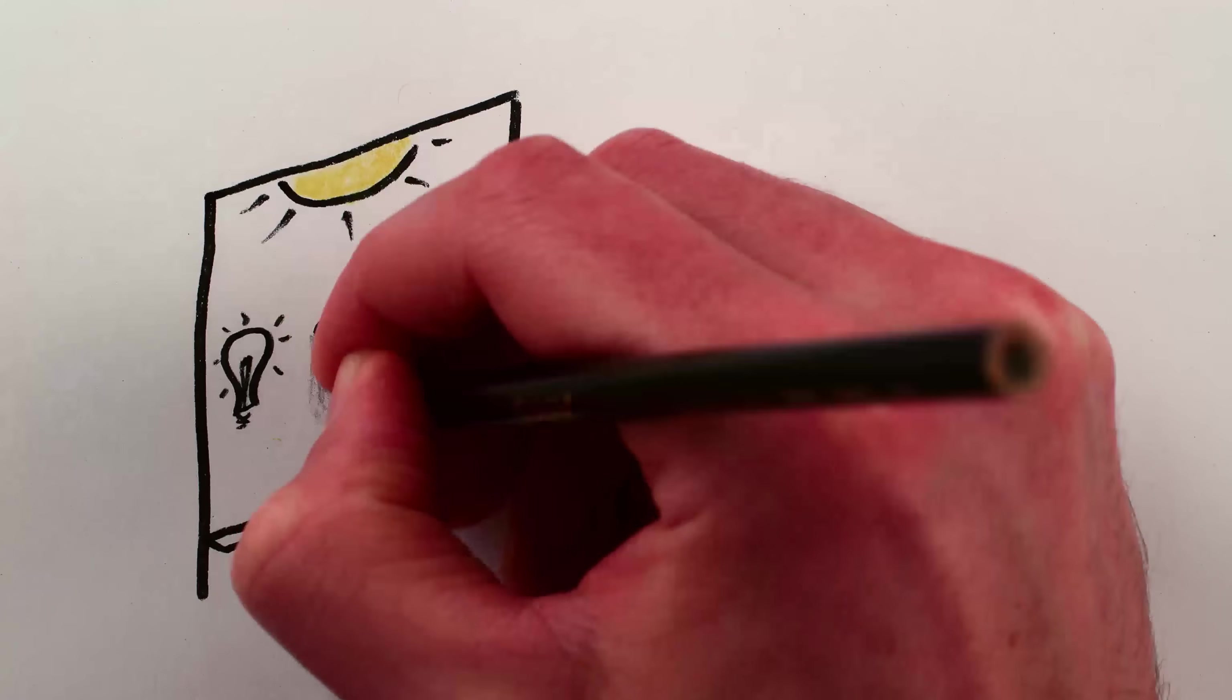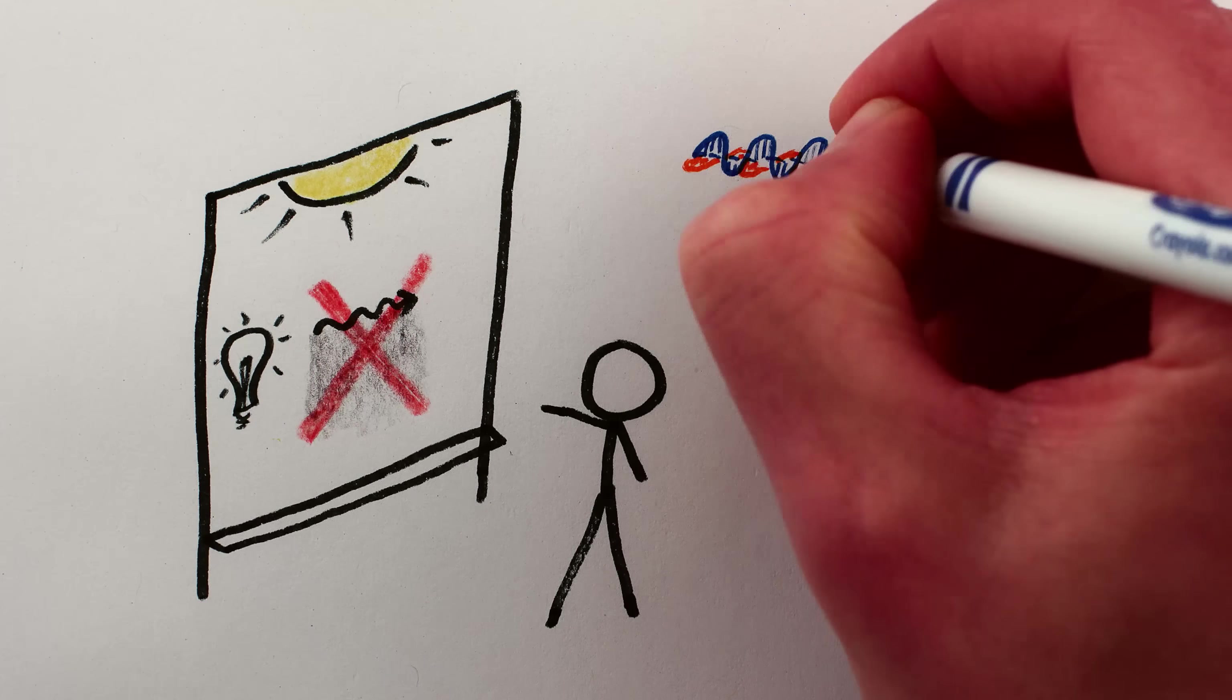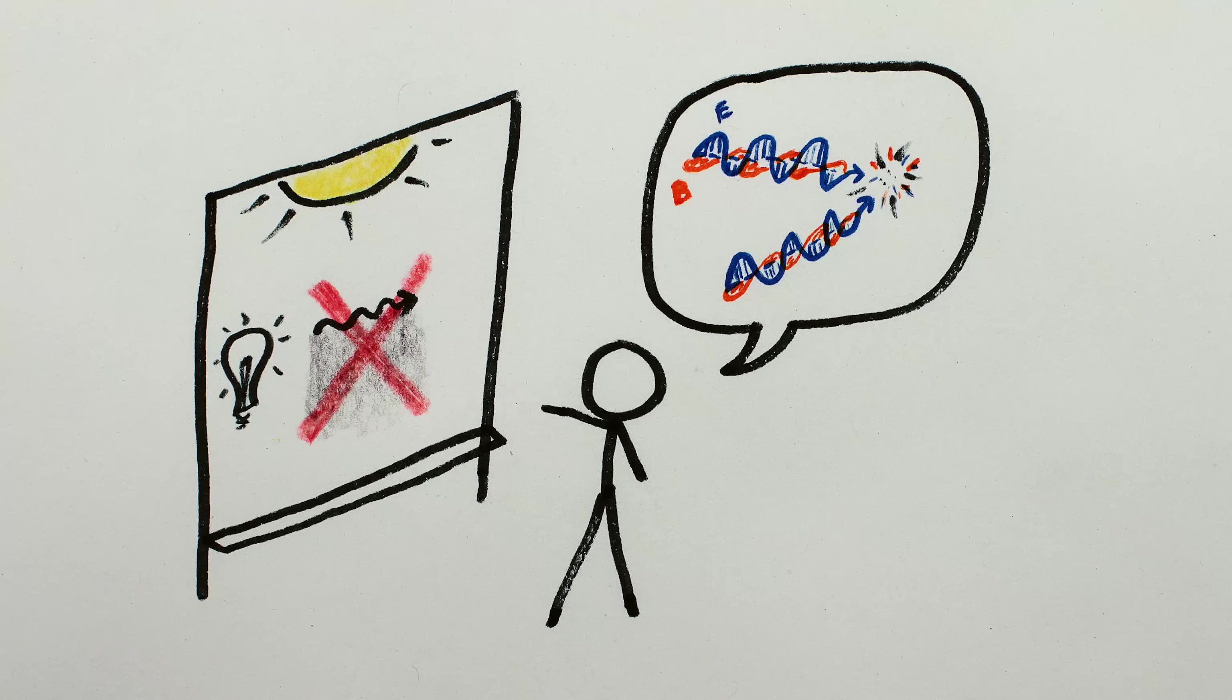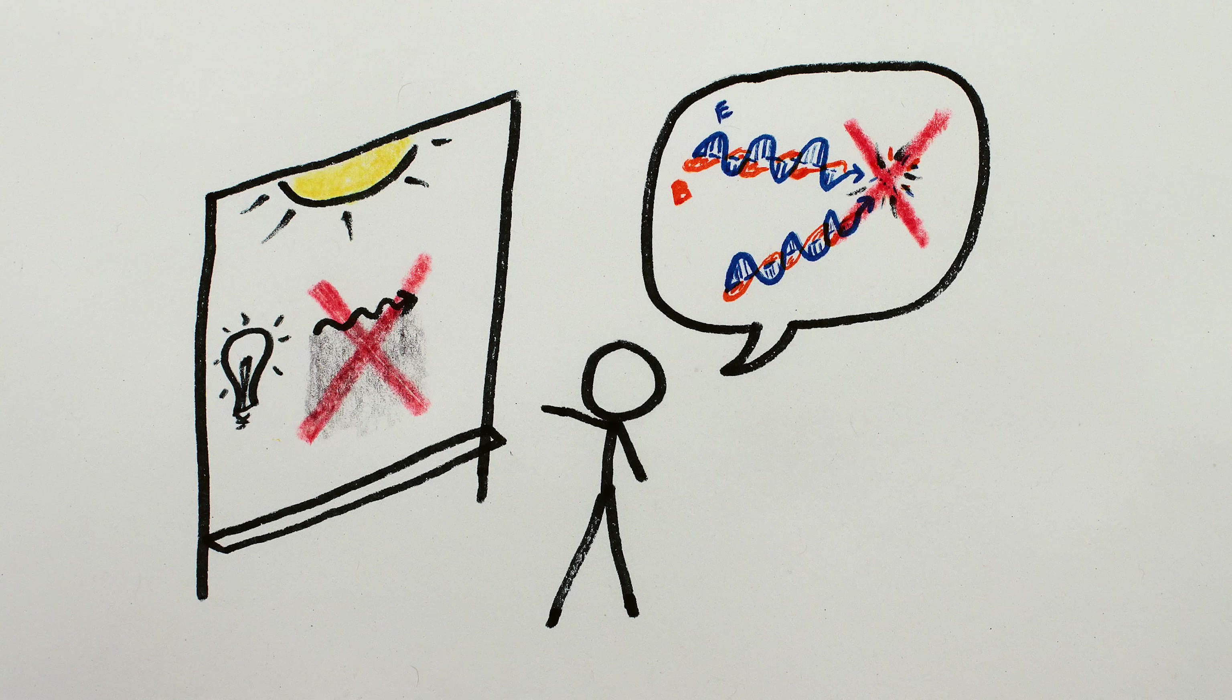At first glance, the answer appears to be no. Light, or photons, are electromagnetic waves, and electromagnetic waves can't directly interact with themselves.